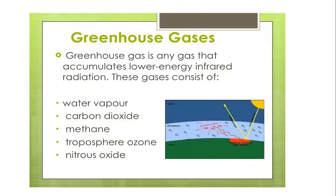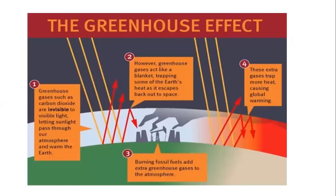Greenhouse gases are gases that accumulate solar energy and infrared radiation. These gases consist of water vapor, carbon dioxide, methane, tropospheric ozone, and nitrous oxide. The greenhouse effect is a process by which greenhouse gases allow visible sunlight to pass through our atmosphere and warm the earth, but then act like a blanket, trapping some of earth's heat as it escapes back into space. Burning fossil fuels adds extra greenhouse gases to the atmosphere, which cannot be released, so these extra gases trap more heat, warming our troposphere in an uncontrolled manner.